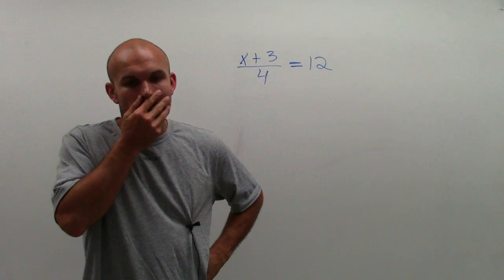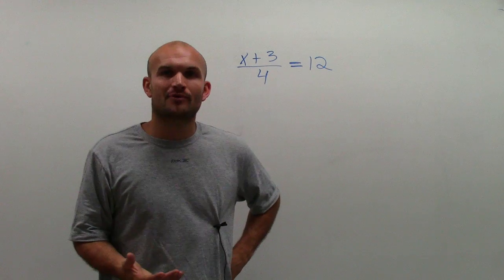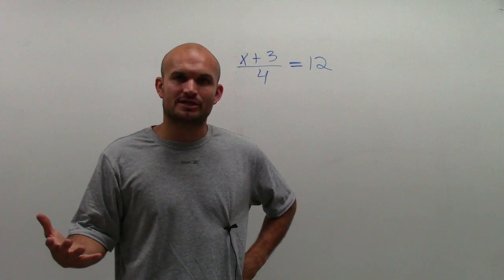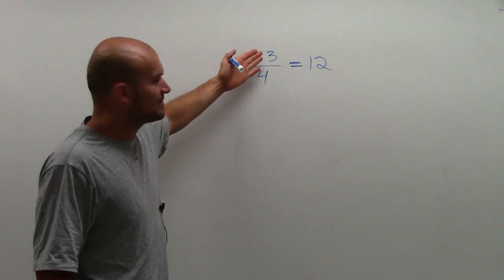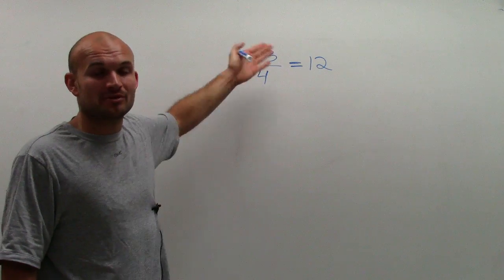And this one's a little bit tricky, because when you think about your usual operations, you want to undo addition and subtraction first. So the common thing is to say, oh, I'm adding a 3 to my variable, so I need to subtract. But we have to be careful with that 3, because that's actually not a 3.